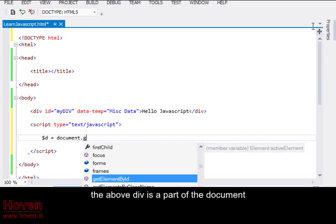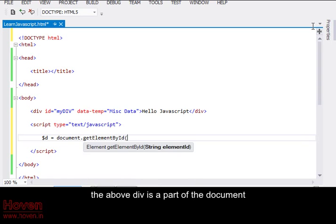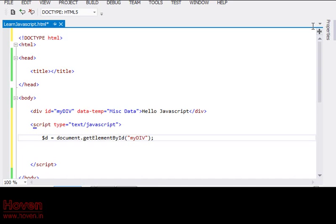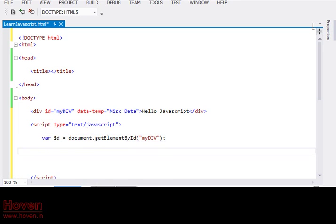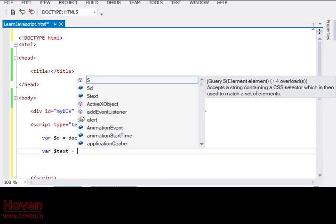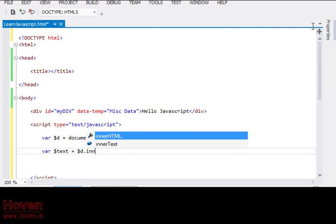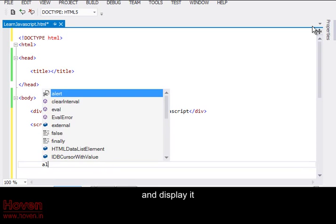The above div is a part of the document. So we can use getElementById to obtain a reference to it. We can read the inner HTML property and display it.